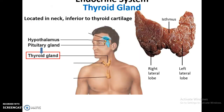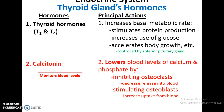The thyroid gland is located in the neck, just below the thyroid cartilage. It produces thyroid hormones that help to increase basal metabolic rate — basically, how much thyroid hormone you produce sets your overall metabolic rate. It stimulates protein production, increases the use of glucose, and accelerates body growth. Thyroid hormones are released when the anterior pituitary gland says so.